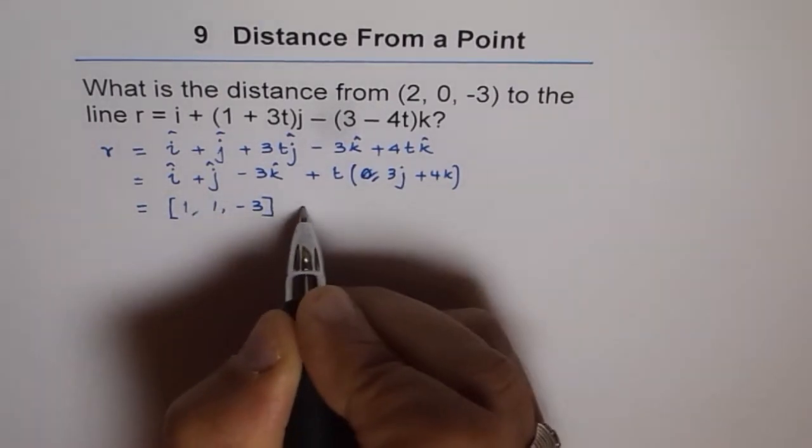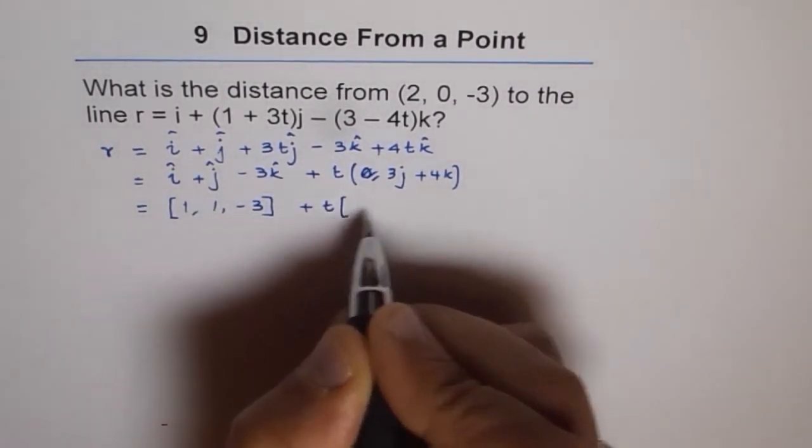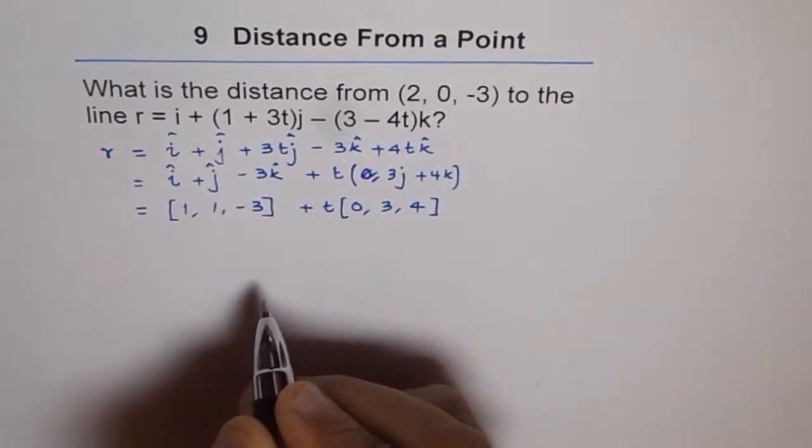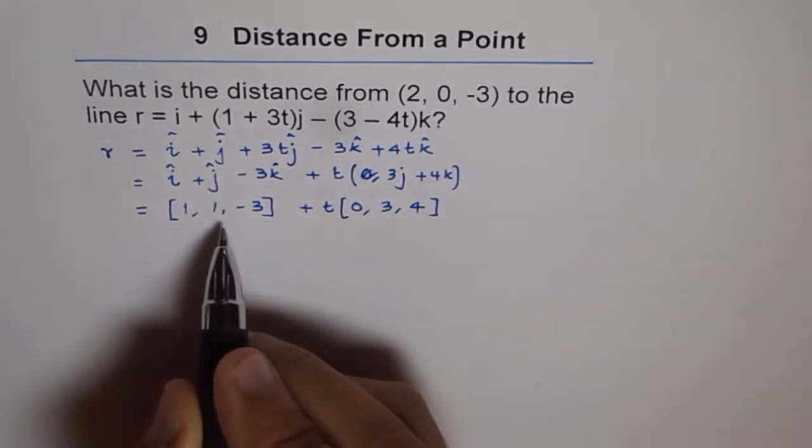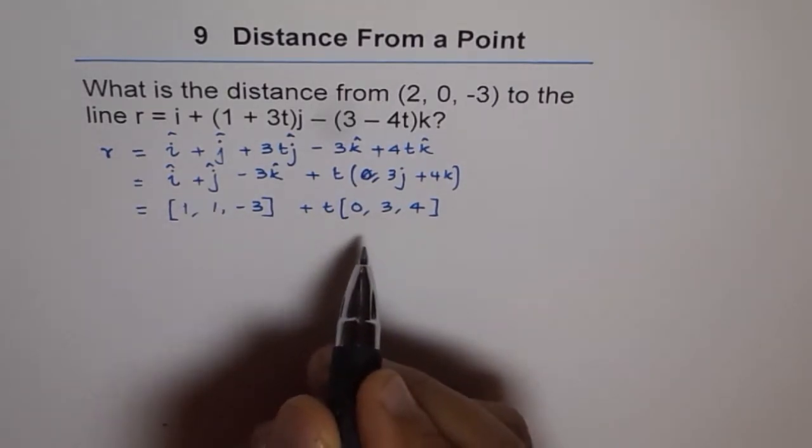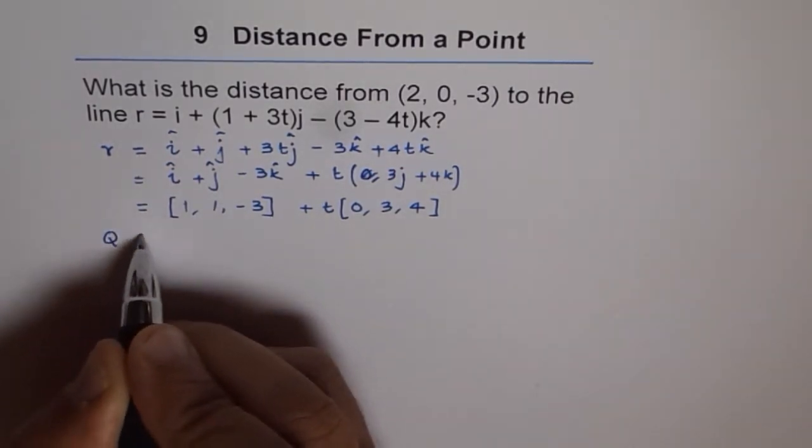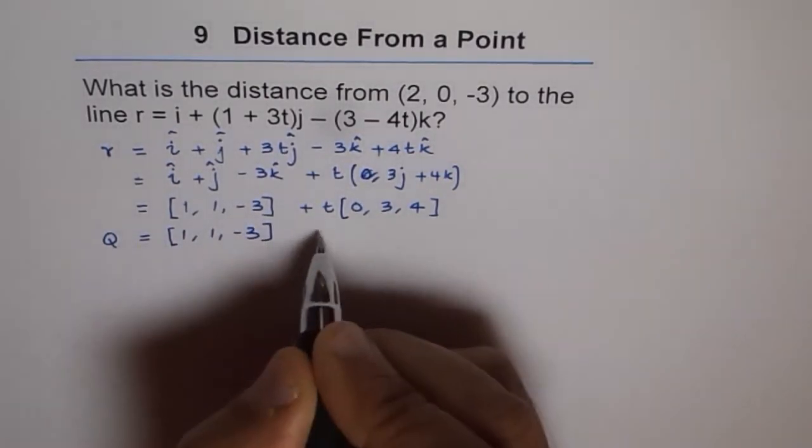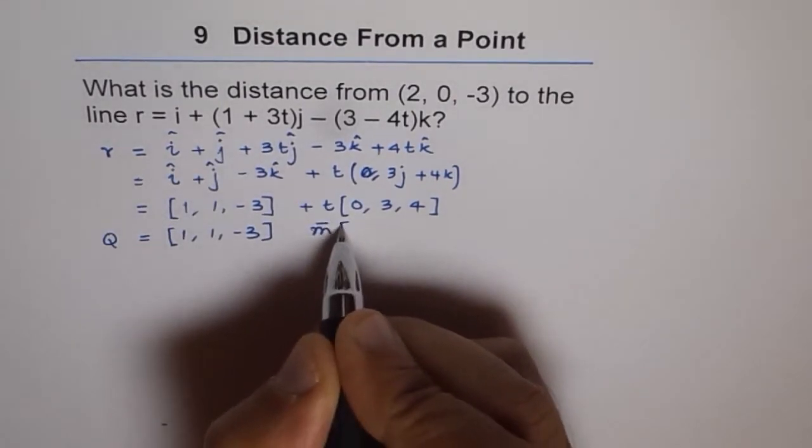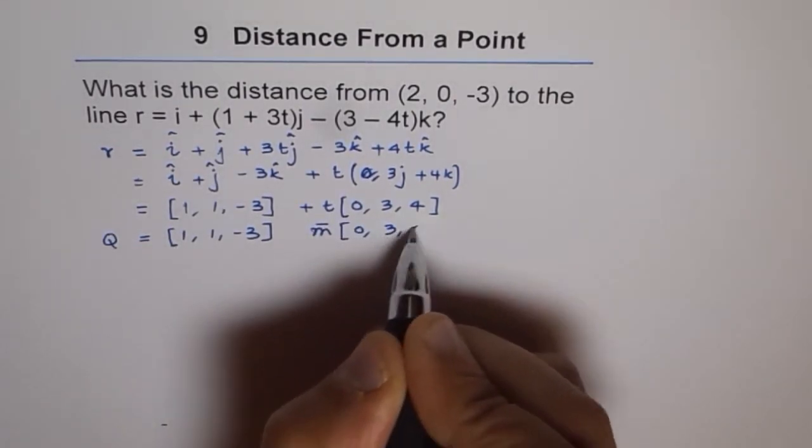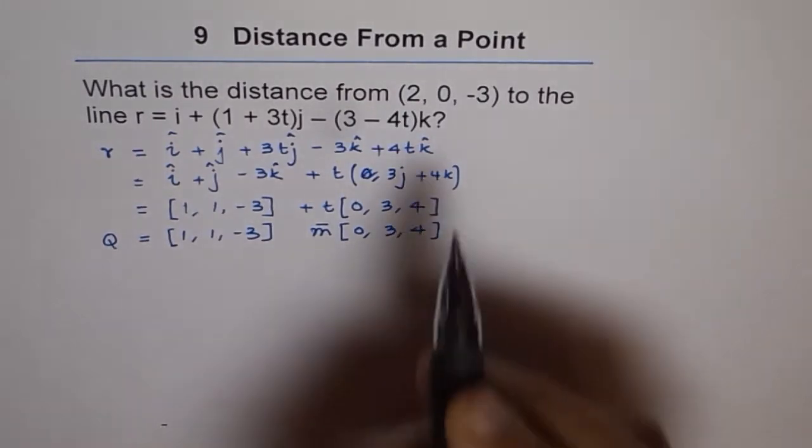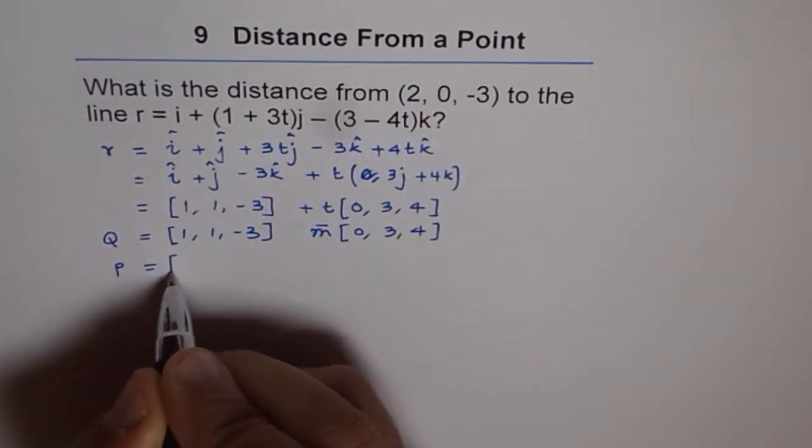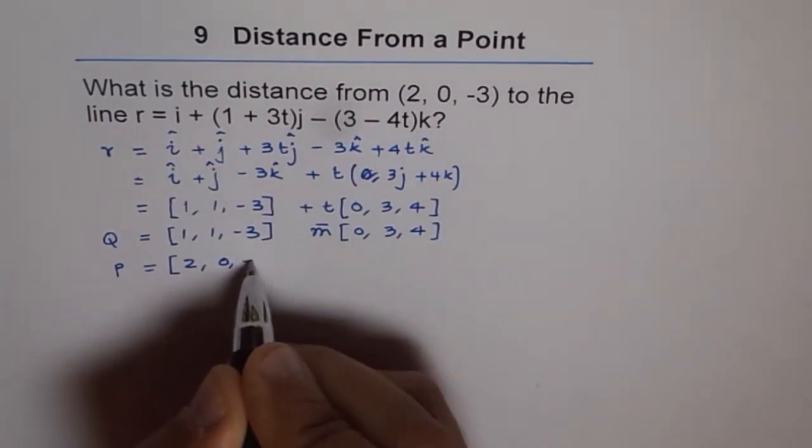So this is the point where t = 0, instead of i you'll write (0, 3, 4), correct? Now, on this line, we have a point and the direction vector. We can say, let this point be Q, and the point will be (1, 1, -3), and let the direction vector be m, so the direction vector will be (0, 3, 4). Now what we are given is a point (2, 0, -3). So we are given a point P, which is (2, 0, -3), correct?